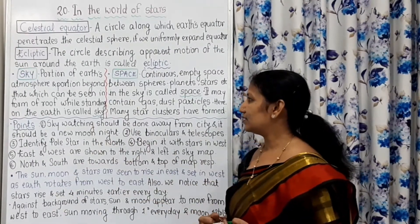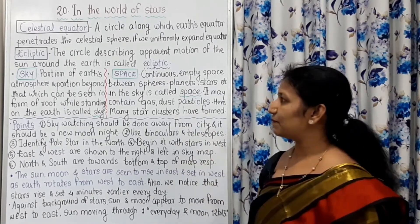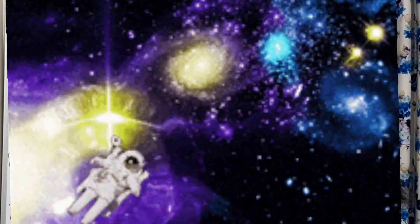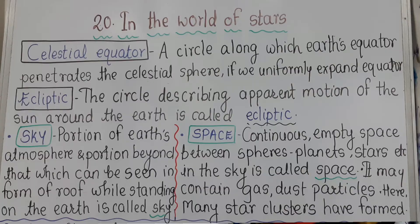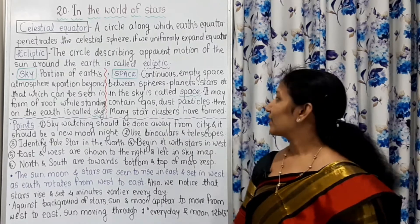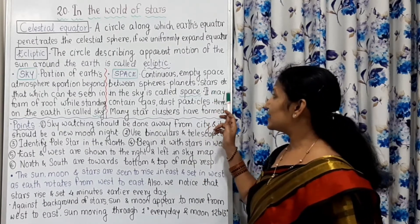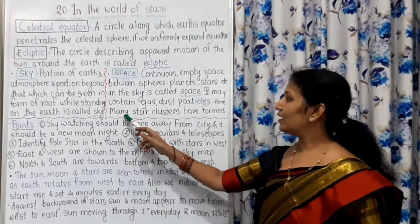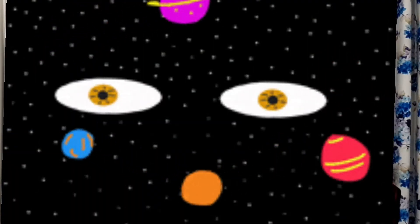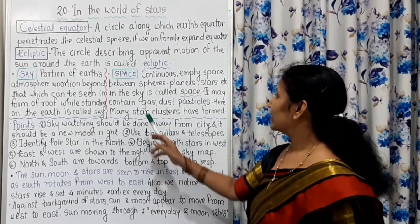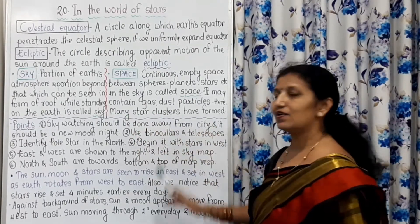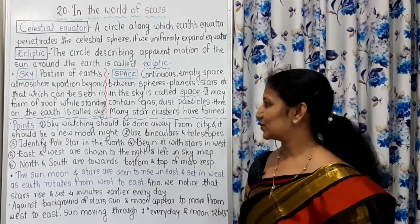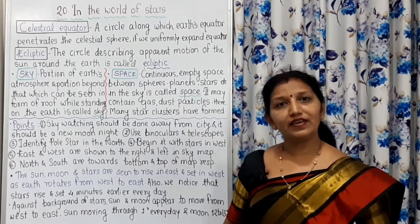What is space? The continuous empty space between spheres — that means planets, stars, etc. — in the sky is called space. Space may contain gas, dust particles, as well as many star clusters that have formed within it.